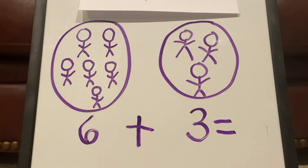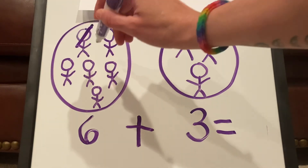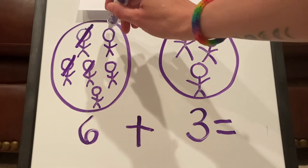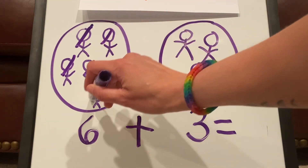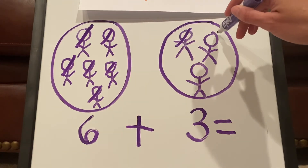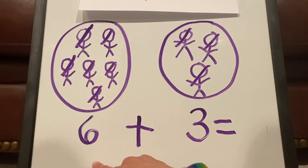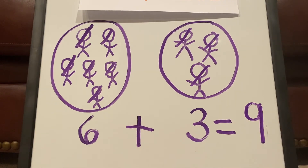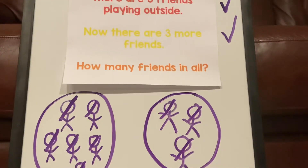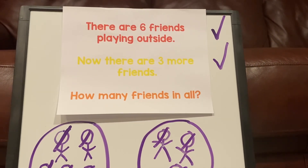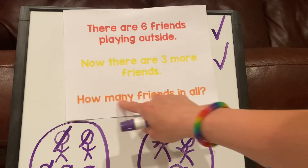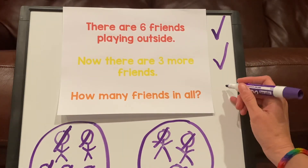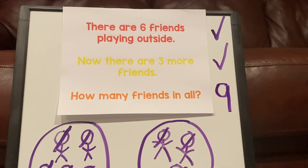You ready to add with me? Let's put our two groups together. I'm going to cross out all of my friends when I'm adding. One, two, three, four, five, six, seven, eight, nine. Six plus three equals nine. Awesome job. So we said six plus three equals nine. How many friends in all? Nine. Great job, my friends.